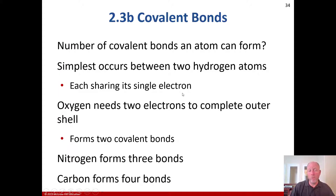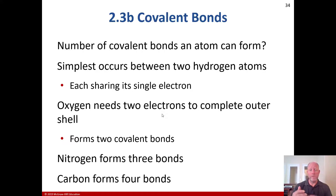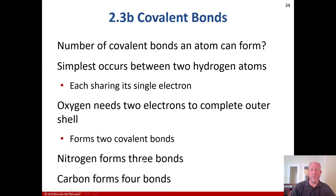The number of covalent bonds an atom can form: the simplest occurs between two hydrogen atoms — hydrogen has one proton and one electron, so it can form one bond. Oxygen basically needs two electrons; it has eight protons and eight electrons and is trying to get up to ten, with two in the first layer and eight in the second, so it can form two covalent bonds. Nitrogen can form three, and carbon four, because nitrogen has five electrons in its outer layer and carbon has four in its outer layer.